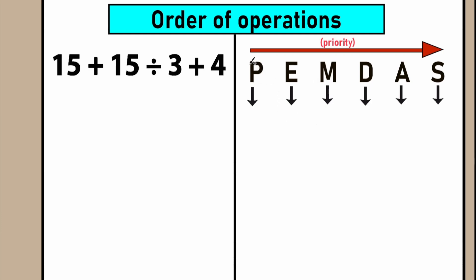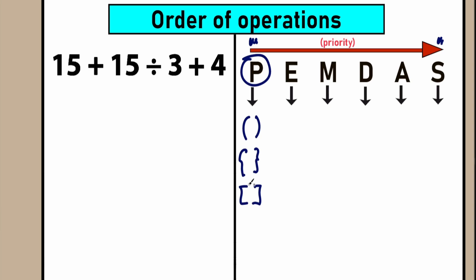Each of these letters stands for something. Starting from the left side, which has higher priority. Letter P stands for parentheses — this type of brackets or grouping symbols. Whenever we have an expression with parentheses, we need to evaluate that expression first. Let's scan our question — do we have parentheses? I don't see any. We don't have parentheses, so we can skip this part. We don't need to evaluate any expression inside parentheses as a first step.